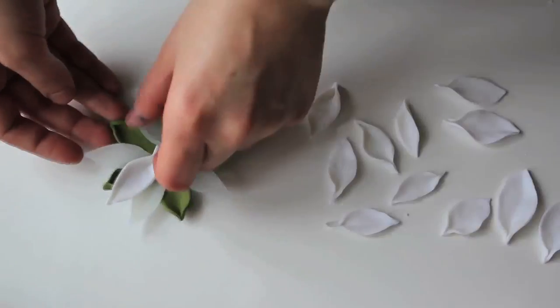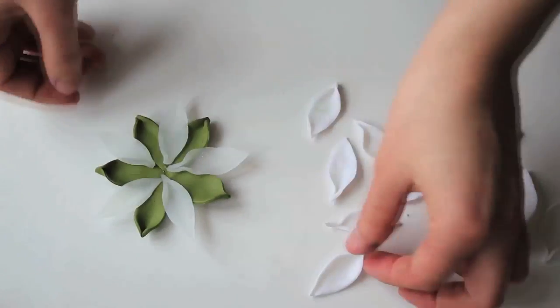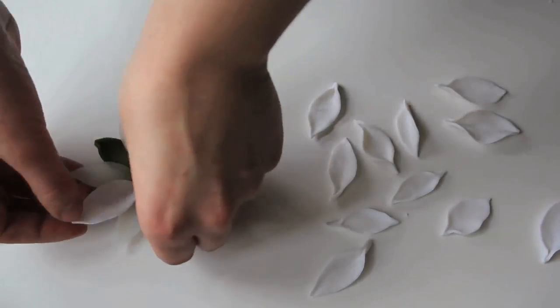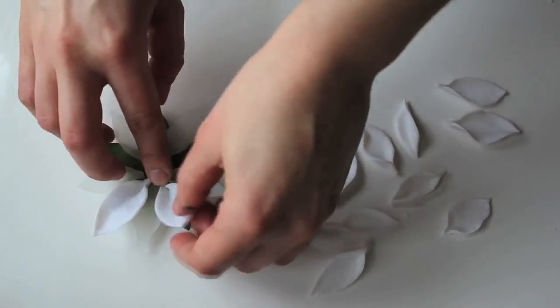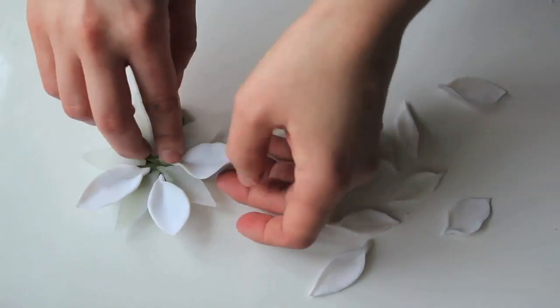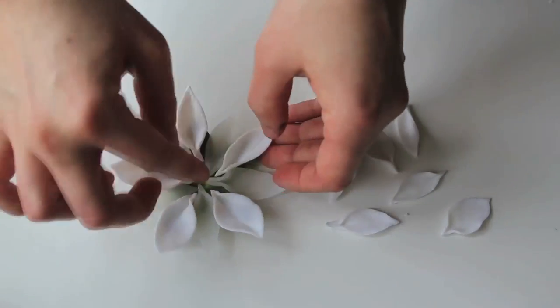Now the first layer is done and we have the sturdy base for all the other petals. You can see how different clay became after baking. So now it's time to place the second layer of petals on top of what's already baked.